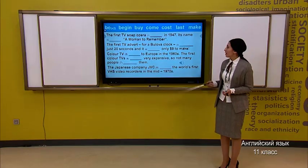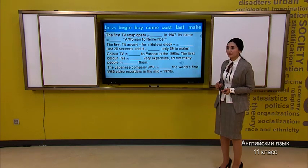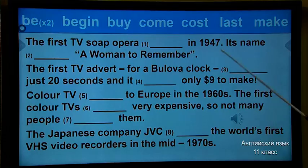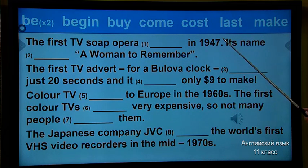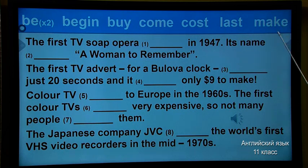Let's check. The first word: 'be' — how do we use 'be' in past simple? Was or were. What about 'begin'? It is an irregular verb: begin — began. Buy: bought. Come: came. Cost: the same — cost. Lost: lost. Make: made. Let's try to fill in the gaps.